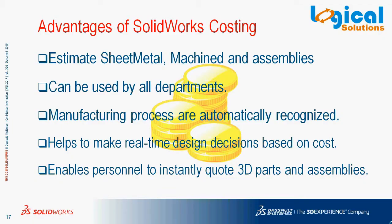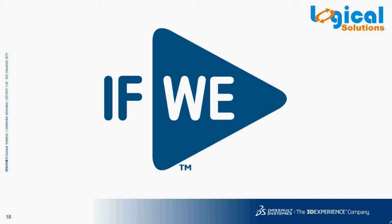Let us take a look at the advantages of SOLIDWORKS costing. With SOLIDWORKS costing, we can estimate the cost for sheet metal parts, machine parts, and also for assemblies. This can be used by any department in an organization. Manufacturing cost processes can also be recognized automatically. This helps to make real-time decisions based on the estimated cost. SOLIDWORKS costing enables individuals to create instant costs for assemblies and parts.